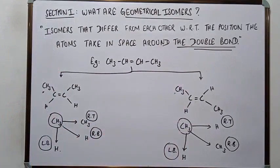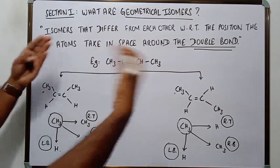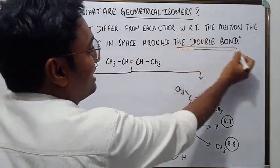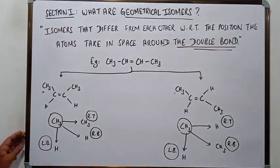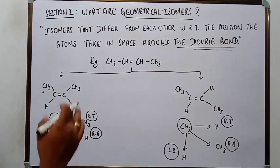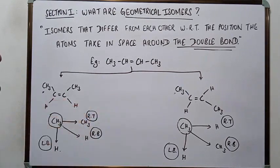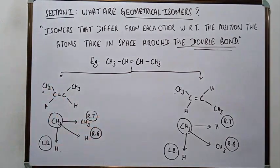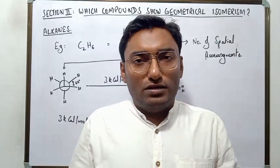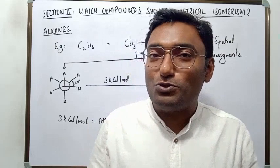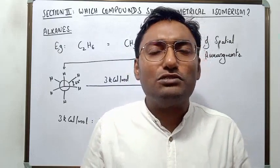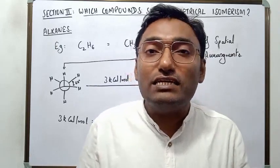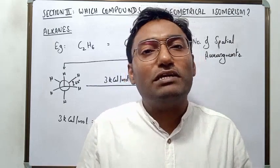Now for Section 2: which compounds show geometrical isomerism? The answer is clear — those compounds that contain a double bond, i.e., alkenes and their derivatives, exhibit geometrical isomerism.